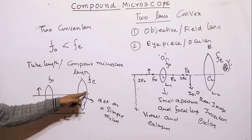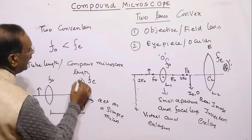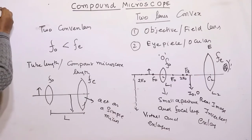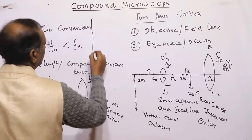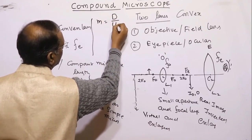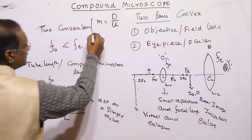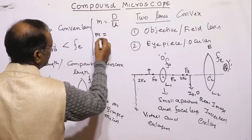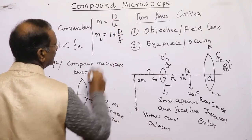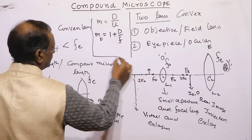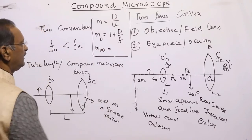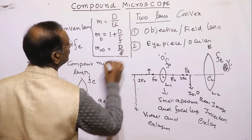The eyepiece behaves as a simple microscope. For a simple microscope, the magnification is given by the least distance of distinct vision divided by the object distance. This is the general expression. If the image is formed at the least distance of distinct vision, then M equals 1 plus D by f. If the image is formed at infinity, then M equals D by f.